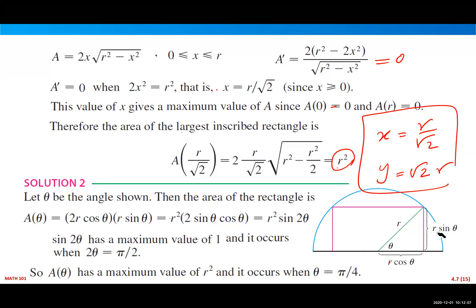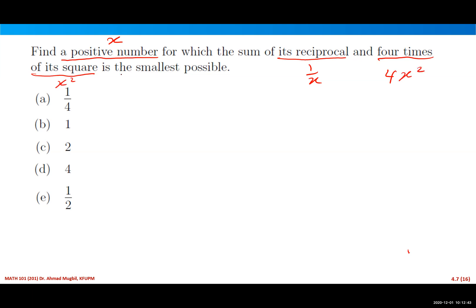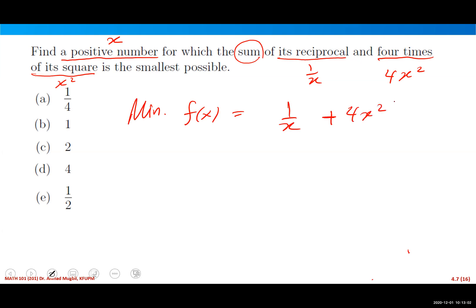Now let's look at another type: a numerical optimization problem. Find a positive number x for which the sum of its reciprocal (1/x) and four times its square (4x²) is smallest. We need to minimize the function f(x) = 1/x + 4x². Since x is a positive number, the domain is x ∈ (0, ∞).